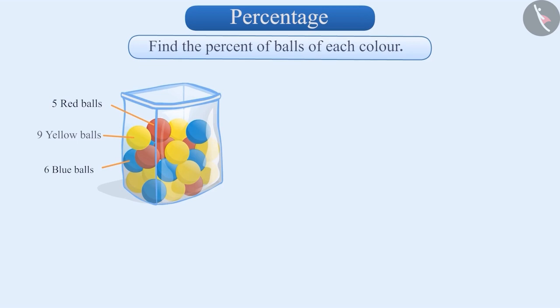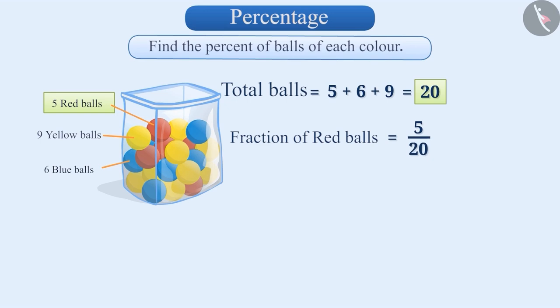First, we will find the total number of balls. Here, the sum of 5 plus 6 plus 9 is 20. That is, out of 20, there are 5 red balls, which we will represent with fraction 5 by 20.